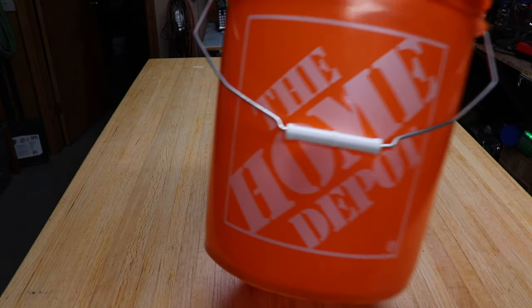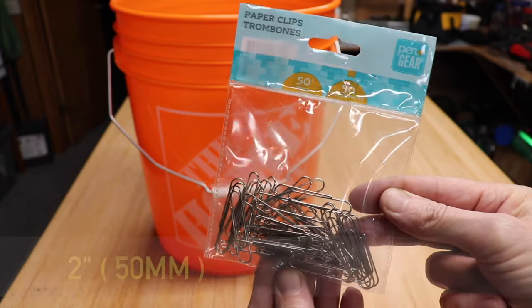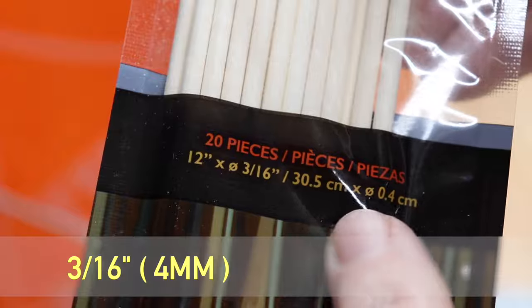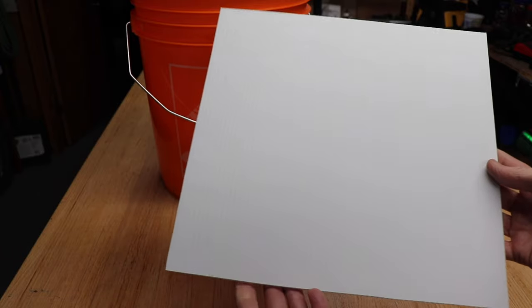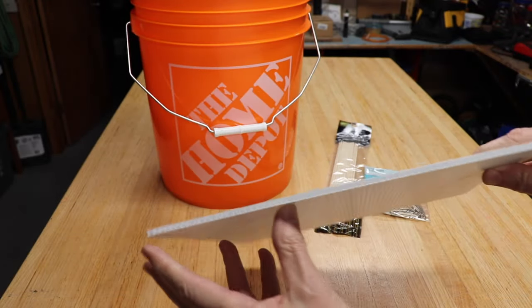Now let's make one. There's only four things you're going to need and the first is a five gallon pail. Next you'll need two two inch paper clips. Go to the dollar store and get three sixteenths inch wooden dowel. And the last thing you'll need is a piece of this plastic cardboard which is 12 inch by 12 inch by three sixteenths of an inch.